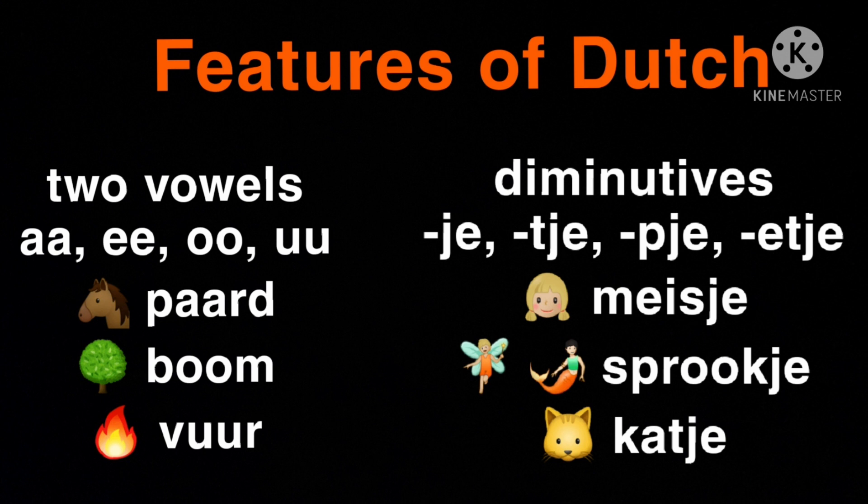But these are just some exceptions. Mostly a diminutive is used to make something more cute or smaller. A cute cat is a katje, and a small tree would be a boompje. And as far as I can tell, in Dutch they are used more frequently than in other languages.